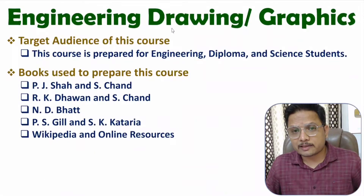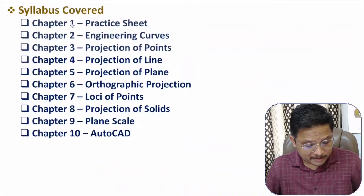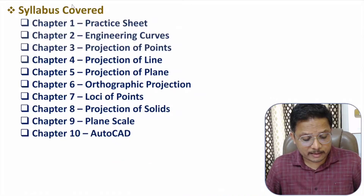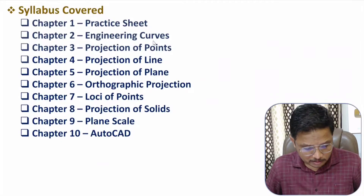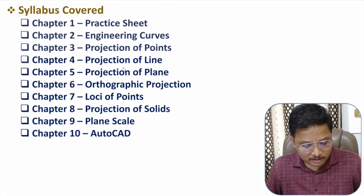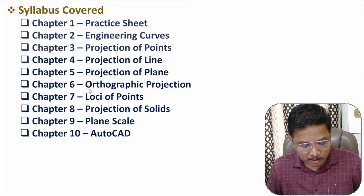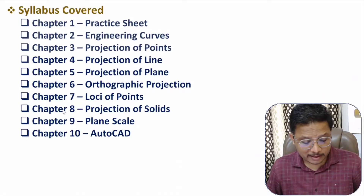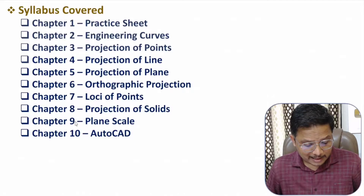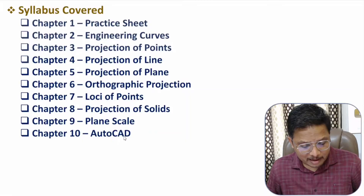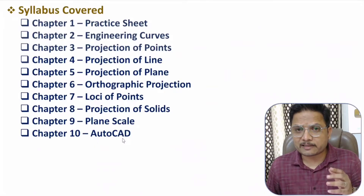If you observe the syllabus of this course, in total 10 chapters are there. First chapter is of practice sheet. Second chapter is of engineering curves. Third chapter is of projection of points. Fourth chapter is of projection of line. Fifth chapter is of projection of plane. Sixth chapter is of orthographic projection. Seventh chapter is of loci of points. Eighth chapter is of projection of solids. Ninth chapter is of plane scale. And the tenth chapter is based on AutoCAD commands. So in total 10 chapters are there.